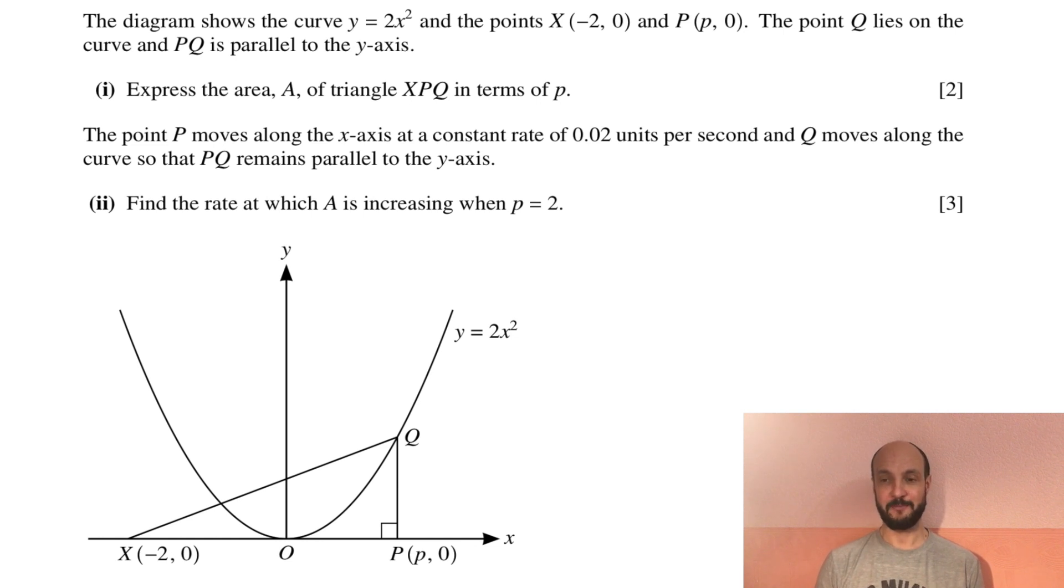Part 1: Express the area A of triangle xpq in terms of p. The point p moves along the x axis at a constant rate of 0.02 units per second and q moves along the curve so that pq remains parallel to the y axis. Part 2: Find the rate at which A is increasing when p equals 2.